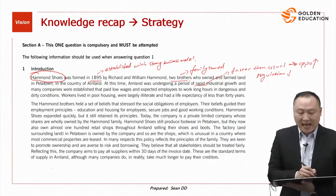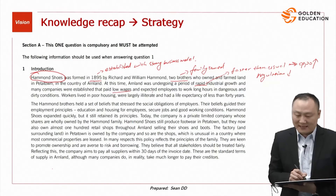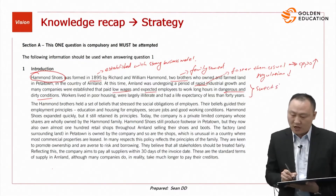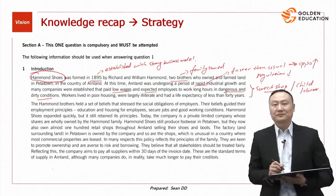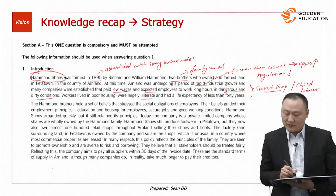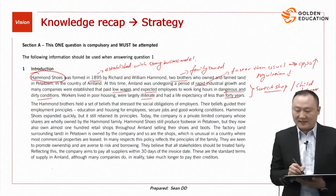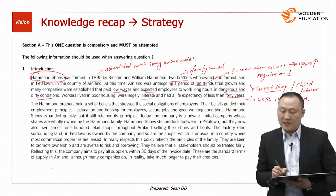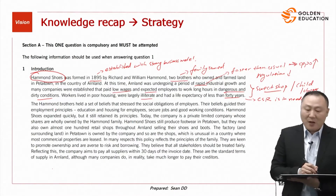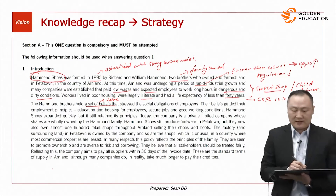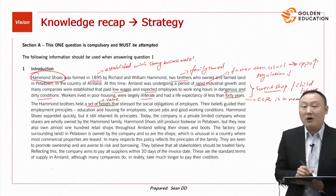Ireland was undergoing rapid industrial growth, and many companies paid low wages and expected employees to work long hours in dangerous and dirty conditions — essentially a sweatshop environment. Workers lived in poor housing, were largely illiterate, and had a life expectancy of less than 40 years. This indicates that corporate social responsibility was in great need, but companies at the time did not really care about it.